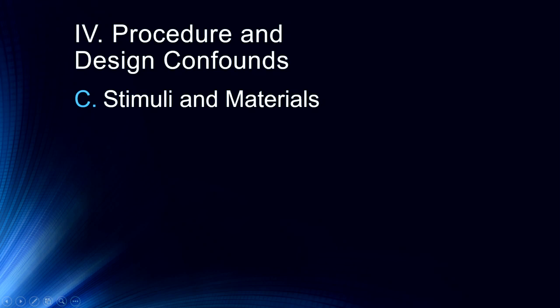Finally, stimulating materials. There is a lot of art in the science of putting together an experiment. One of the things we want to watch for are item type and difficulty. Say we're going to have people study items in the morning and test them, and then do the same thing in the afternoon — we're interested in circadian rhythm. We'll have to make sure that half the participants get one set of items in the morning while the other half get those same items in the afternoon, and vice versa. This is called counterbalancing, so that if some items are more difficult or harder to remember, we've counterbalanced them across morning and afternoon to eliminate that as a potential effect.